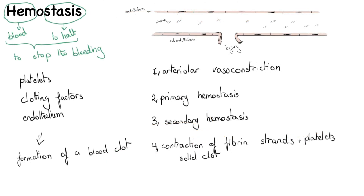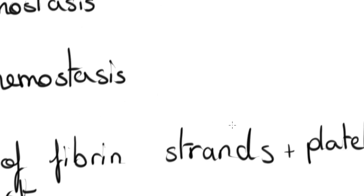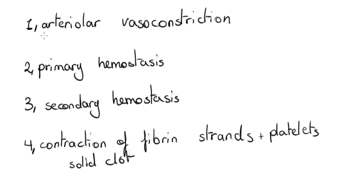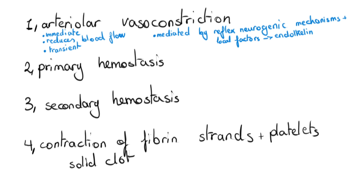The first step is arterial vasoconstriction. This happens immediately after the injury to reduce blood flow and prevent bleeding. However, it only has a transient effect and bleeding would resume if other actions aren't taken. It is mediated by reflex neurogenic mechanisms and also by local factors such as endothelin, which is a potent vasoconstrictor.